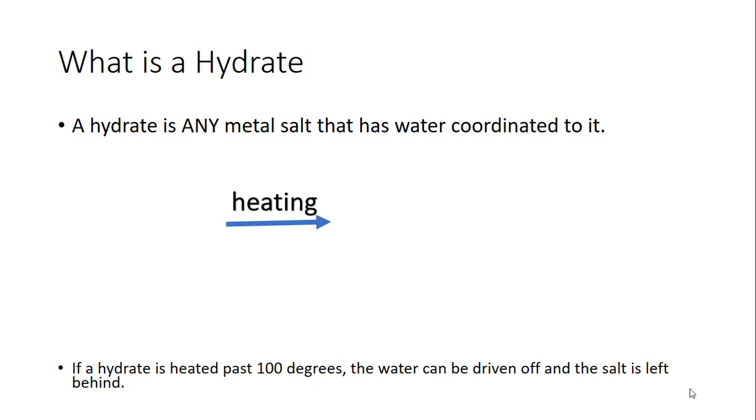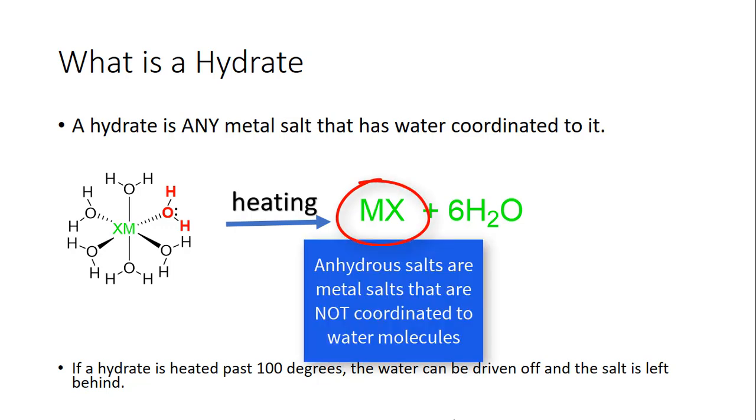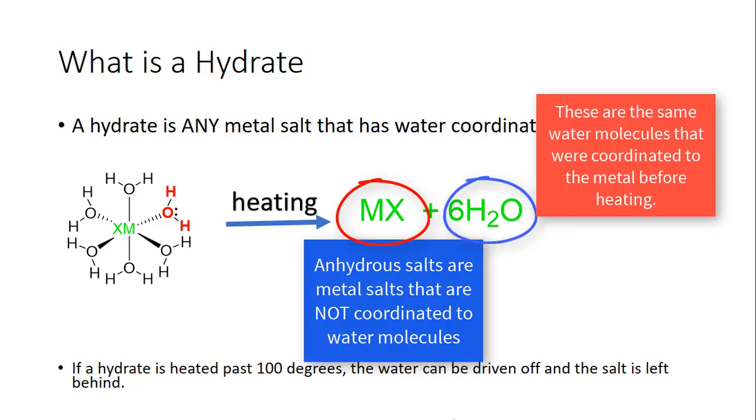What is a hydrate? A hydrate is any metal salt that has water coordinated to it. If you look here, the metal is in green and this particular metal has six water molecules coordinated to it. If you know the boiling point of water which is 100 degrees, if you heat the hydrate past 100 then it's possible to dehydrate it and drive off the water. If you continue to heat it you're going to get the anhydrous salt which is MX and then you would have driven off six molecules of water.